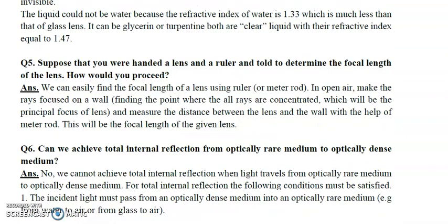Question number five: You are given a lens and a ruler. You have to determine the focal length of the lens. This is very easy — go to an open area with sunlight, adjust the sunlight rays so they fall on the lens, and measure the distance from the wall to the lens where the rays focus. That distance is the focal length.